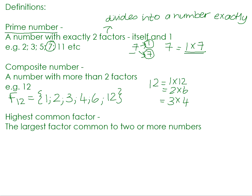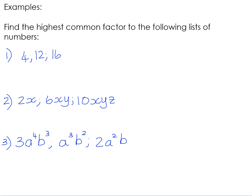And then the highest common factor refers to when we have two or more numbers. The highest common factor is going to be the biggest factor that is common — in other words, shared by those numbers. We're going to have a look at some examples now. Find the highest common factor of: 4, 12, and 16.